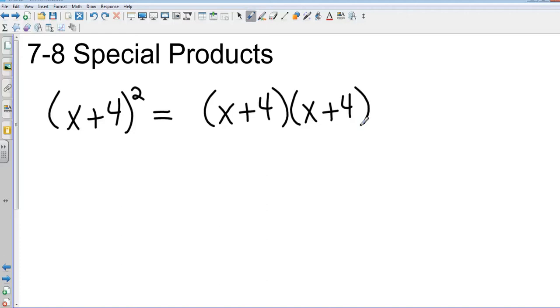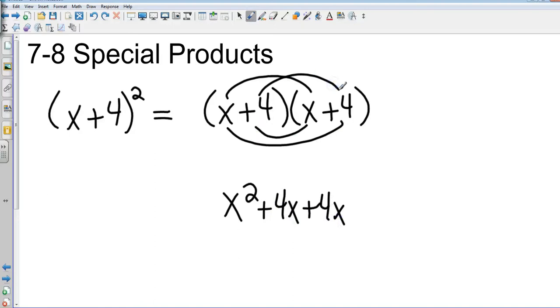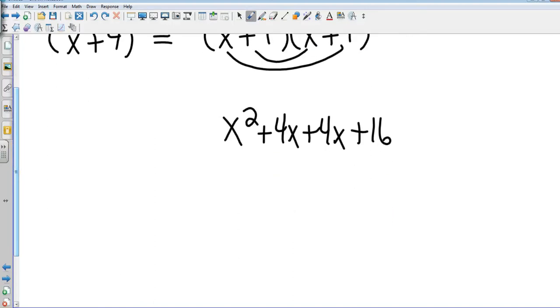So this is just FOIL method. We're going to do first, outside, inside, and last. Noticing that those two common terms in the middle, that's going to give me x squared plus 8x plus 16.